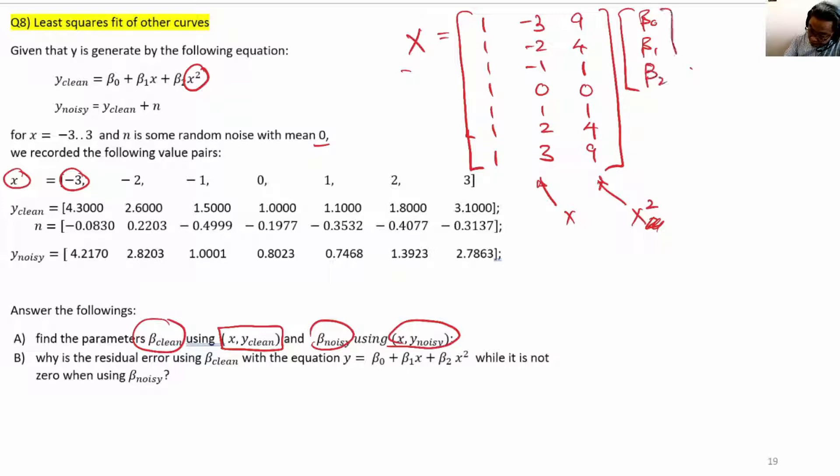This is the design matrix. It will be multiplied with β₀, β₁, β₂. For the y, we just record these values from y_clean. The first value of y_clean is 4.3, the second is 2.6, 1.5, and so on until the last one is 3.1.